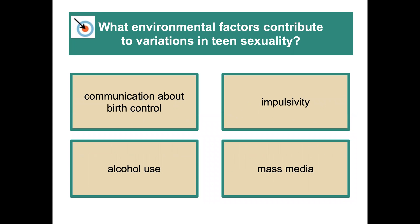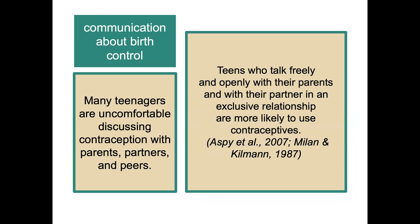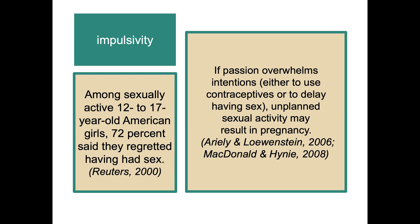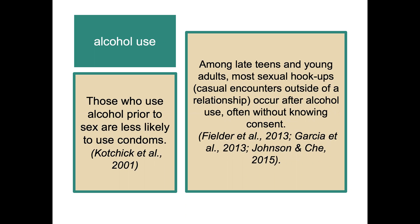What environmental factors contribute to variations in teen sexuality? Key factors include communication about birth control options, levels of impulsivity, alcohol use, and mass media. Many teenagers are uncomfortable discussing contraception with parents, partners, and peers. Teens who can talk freely and openly with their parents and partners are more likely to use contraceptives. Impulsivity also plays a large role — among sexually active teenagers, 72% said they regretted having sex. Those who use alcohol prior to sex are less likely to use condoms.